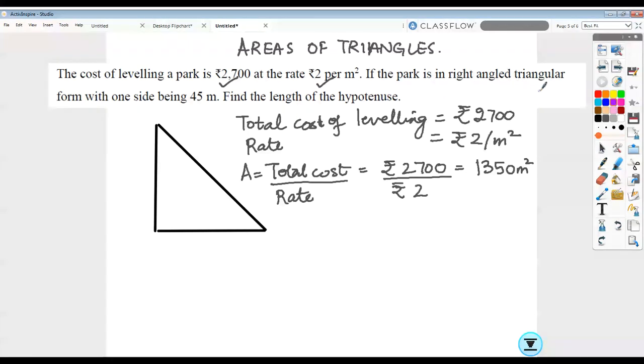Now the park is in a right-angled triangular form with one side being 45 meters. So here one side is 45 meters. We do not know what the other side is and neither do we know what the hypotenuse is. This is the question we have to find out: the hypotenuse. I have the area of the triangle, so I can always associate the area with half into base into height for a right-angled triangle.